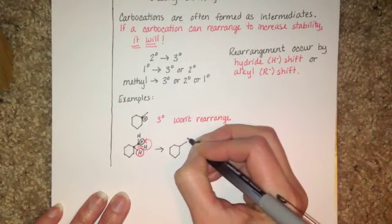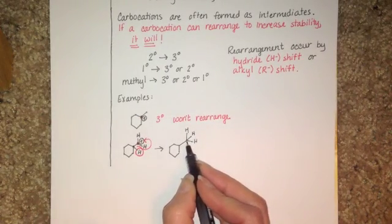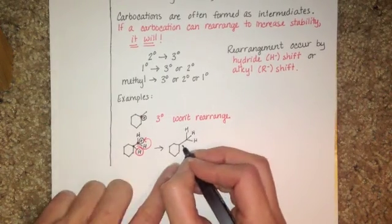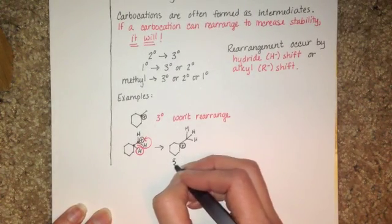When that happens, we end up with this carbon atom being perfectly fine and this carbon atom bearing the positive charge, which is okay, because now we have a tertiary carbon, which is more stable.